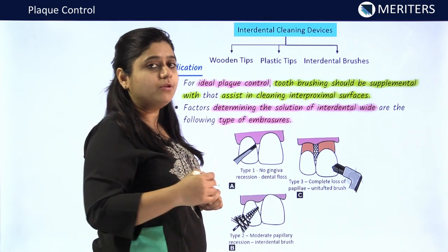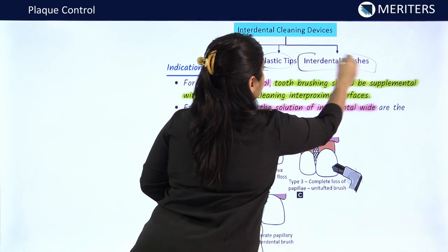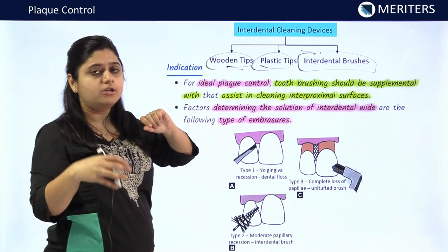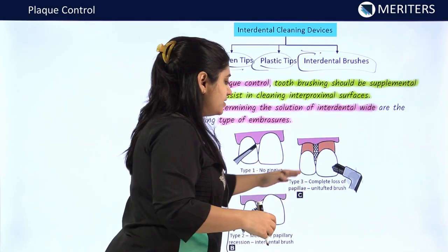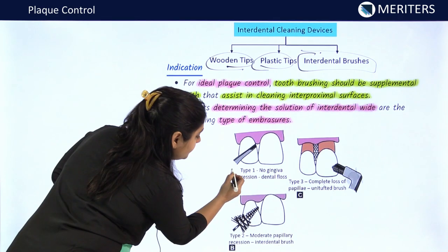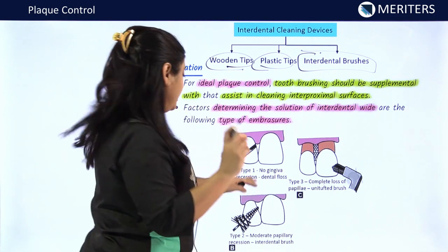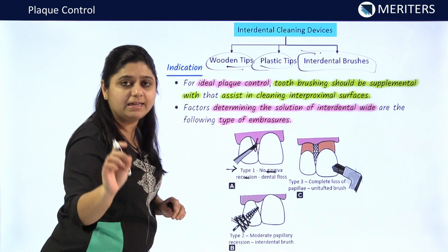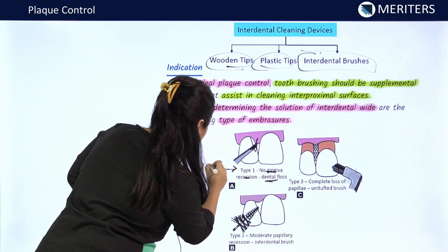Various interdental cleaning devices are used based on the type of embrasures: wooden tips, plastic tips, and interdental brushes. In type 1 embrasure, which is present in healthy gums with no gingival recession and the gingival embrasure completely covered by the interdental papilla, we can use dental floss.